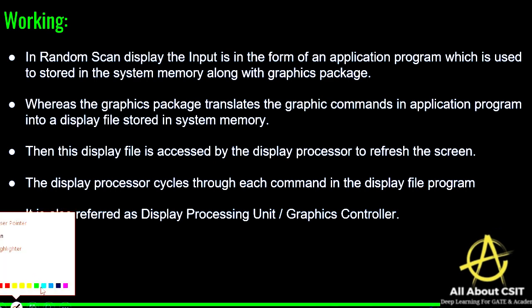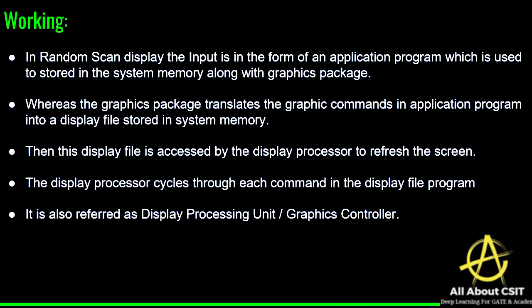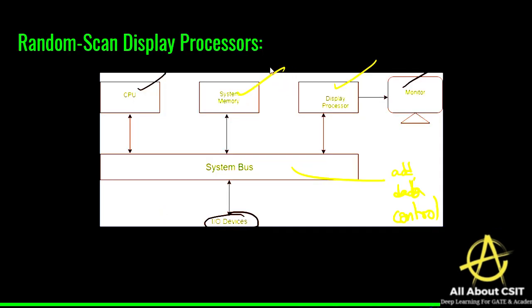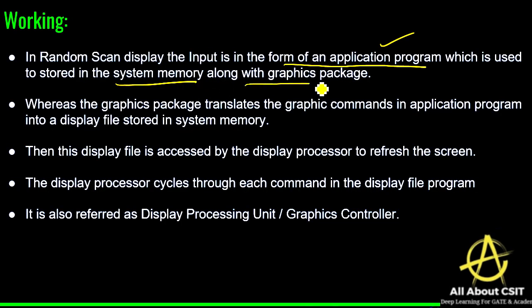In random scan display, the input is in the form of an application program. The user provides code which is stored in system memory. The system memory stores the program and system-related information along with the graphics package. The graphics package translates graphic commands in the application program into a display file stored in system memory, using library functions related to graphics.